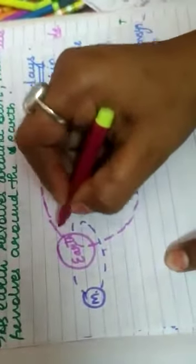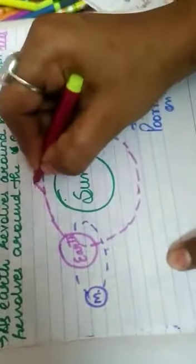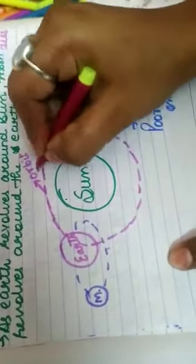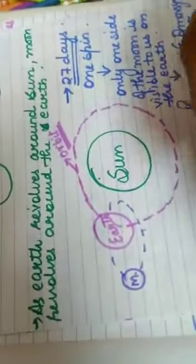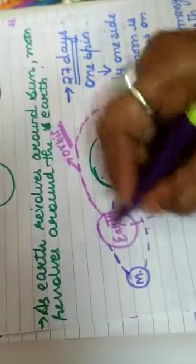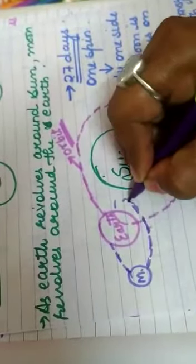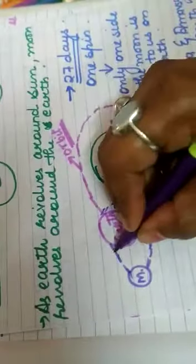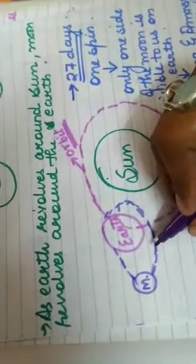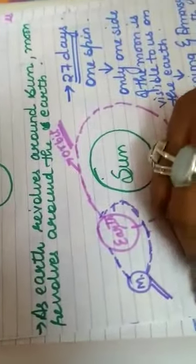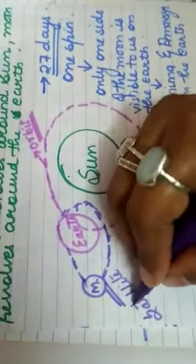Each and every planet has its own path or orbit. On this orbit, all the planets revolve around the Sun, just as Earth revolves around its own orbit. Similarly, the Moon revolves around the Earth — not the Sun. It moves in a fixed orbit around the Earth, just like the Earth moves around the Sun. So the Moon is the natural satellite of our Earth.